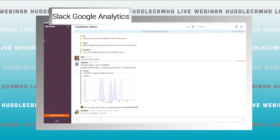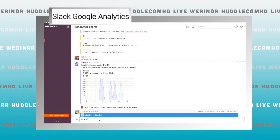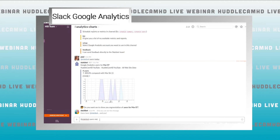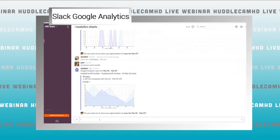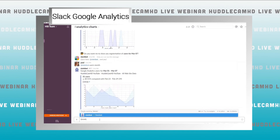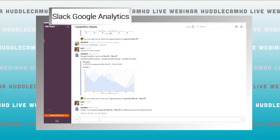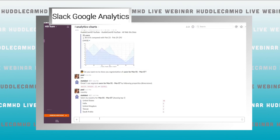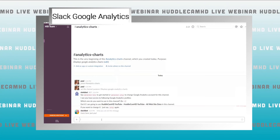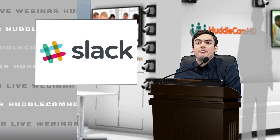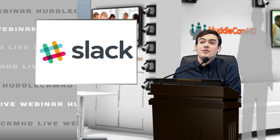Once the bot is configured, you can pull charts using metrics and dimensions. For example, a metric might be 'users' and a dimension might be 'monthly' — so you get a monthly user report for your website. We pulled a user-by-monthly report covering the week of February 23rd to February 29th. You can also schedule these reports to run automatically and break them down by variable. This is probably one of the most powerful Slack integrations that teams can take advantage of right away.